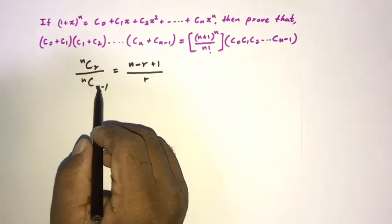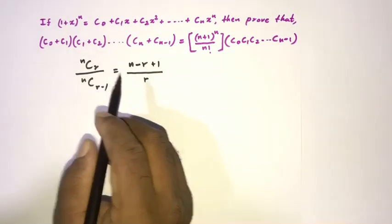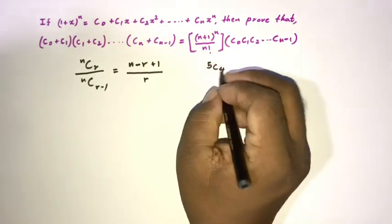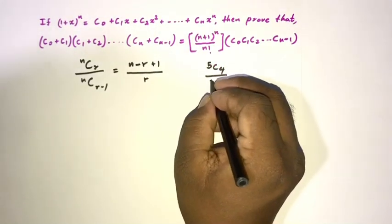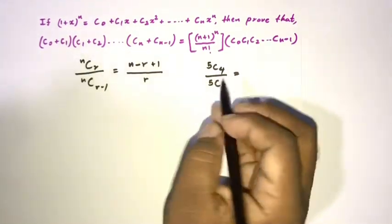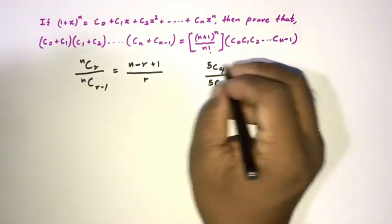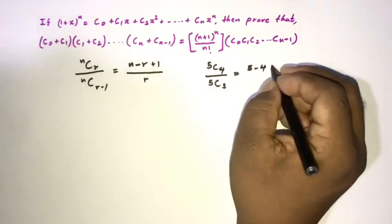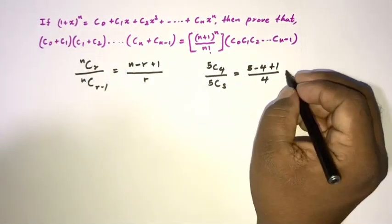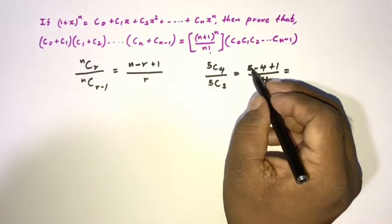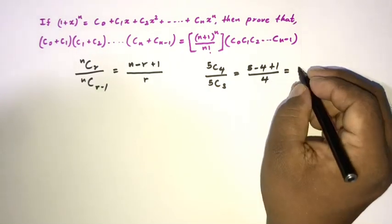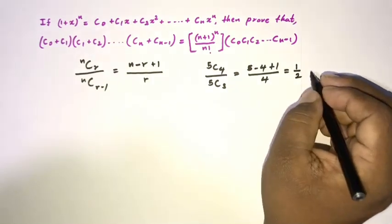For example, if we have 5 choose 4 over 5 choose 3 — here r equals 4 and r minus one equals 3 — we apply the formula: (5 - 4 + 1) / 4 = 2 / 4 = one half.